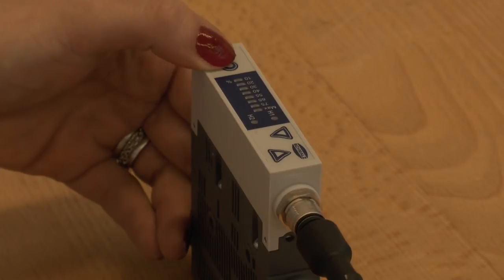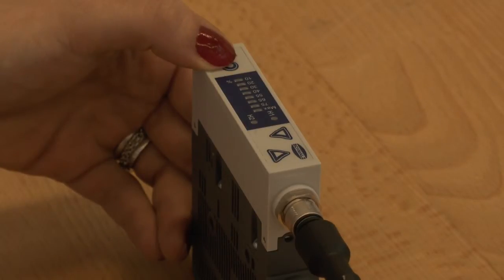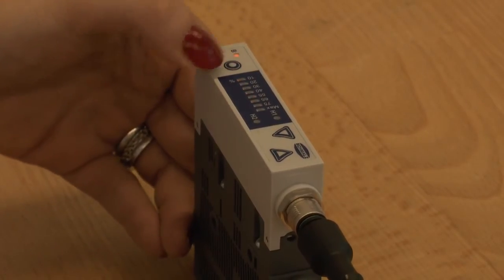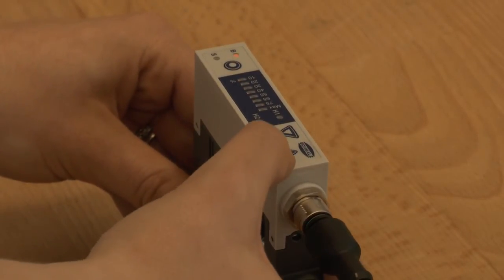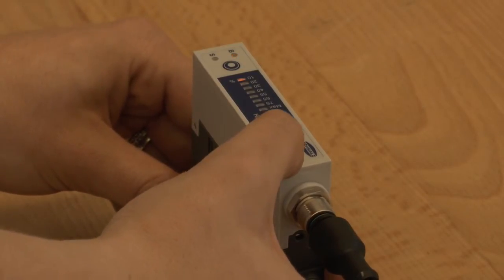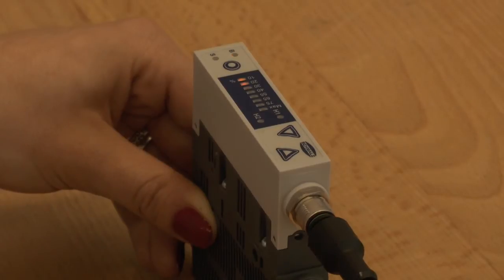Blow-off time is also set by using the bar displays. Values for the blow-off time can be taken from your user manual. A blow-off time of 20% corresponds, for example, to a blow-off time of 50 milliseconds.